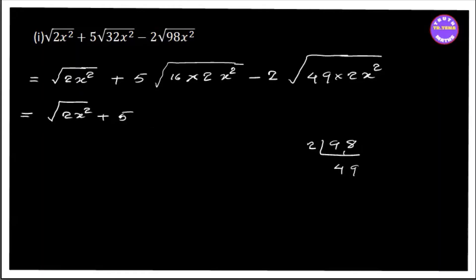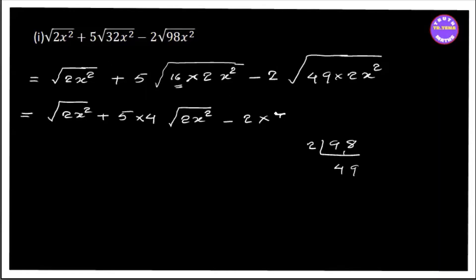You can see this is 4, 16, so you can see this is rule 2x squared minus 2, 49, so you can see this is 2x squared.